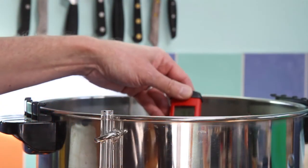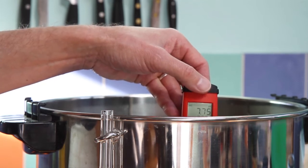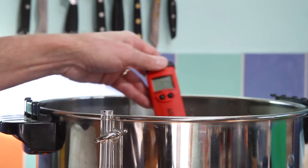Let's check the pH of the sparge water. 7.75 of untreated sparge water. I am going to make the acid addition, then we will check it again.